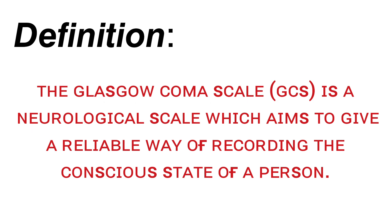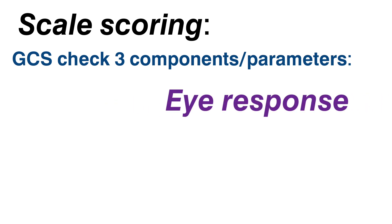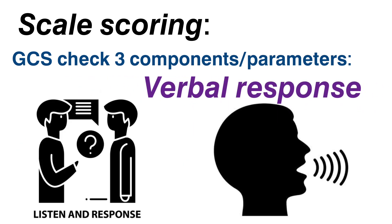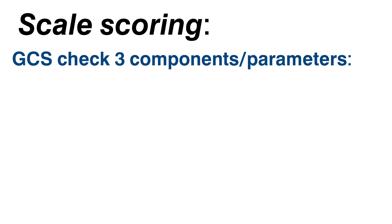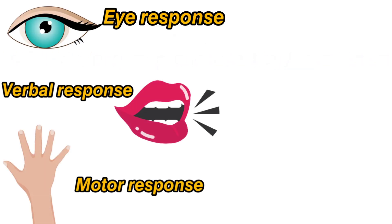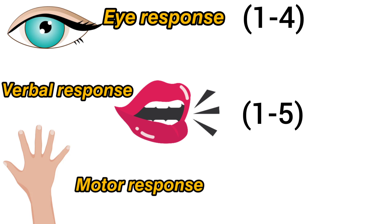The Glasgow Coma Scale measures a patient's conscious level after a brain injury. The GCS has 3 components: Eye Response, Verbal Response, and Motor Response. Eye response is scored 1 to 4, verbal response is 1 to 5, and motor response is 1 to 6.